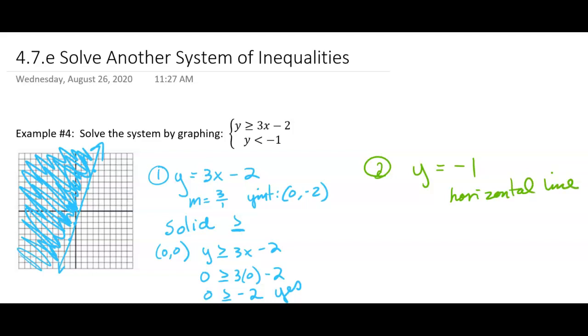And it's going to be at negative 1. Will that line be solid or dotted? Will it be dotted? Because it's just a less than this time. So negative 1, horizontal line. I don't know if you can see it. Hopefully you can see it. It's right there at negative 1.